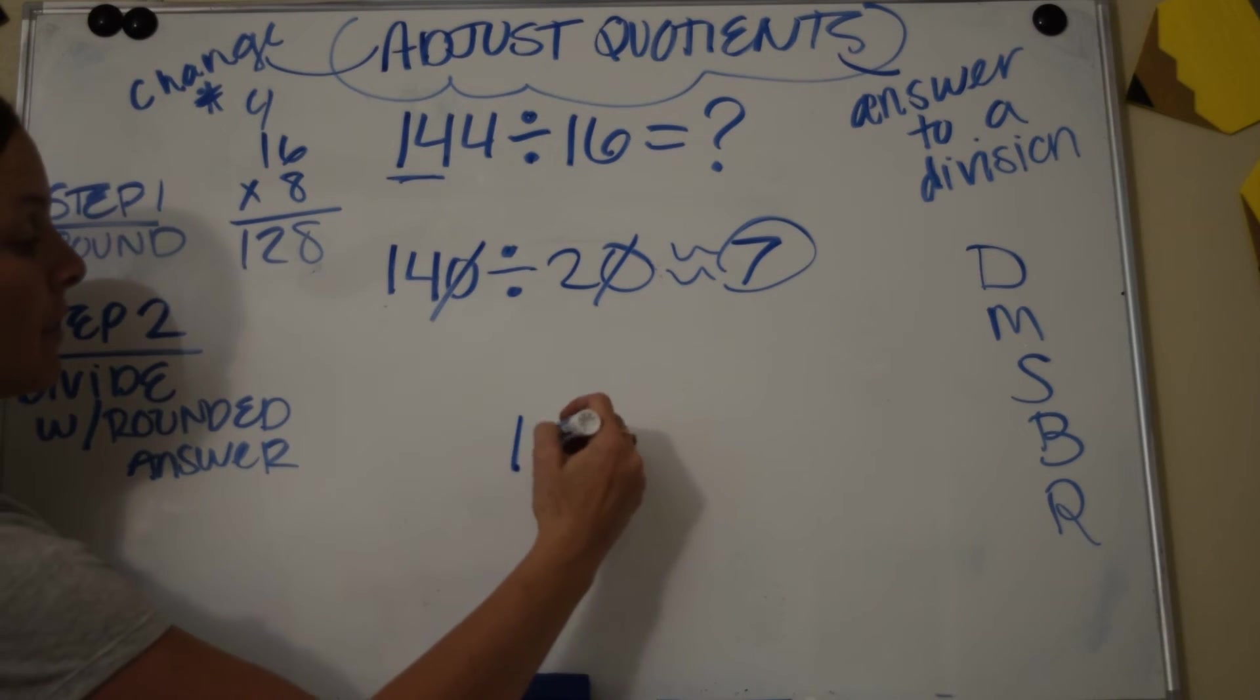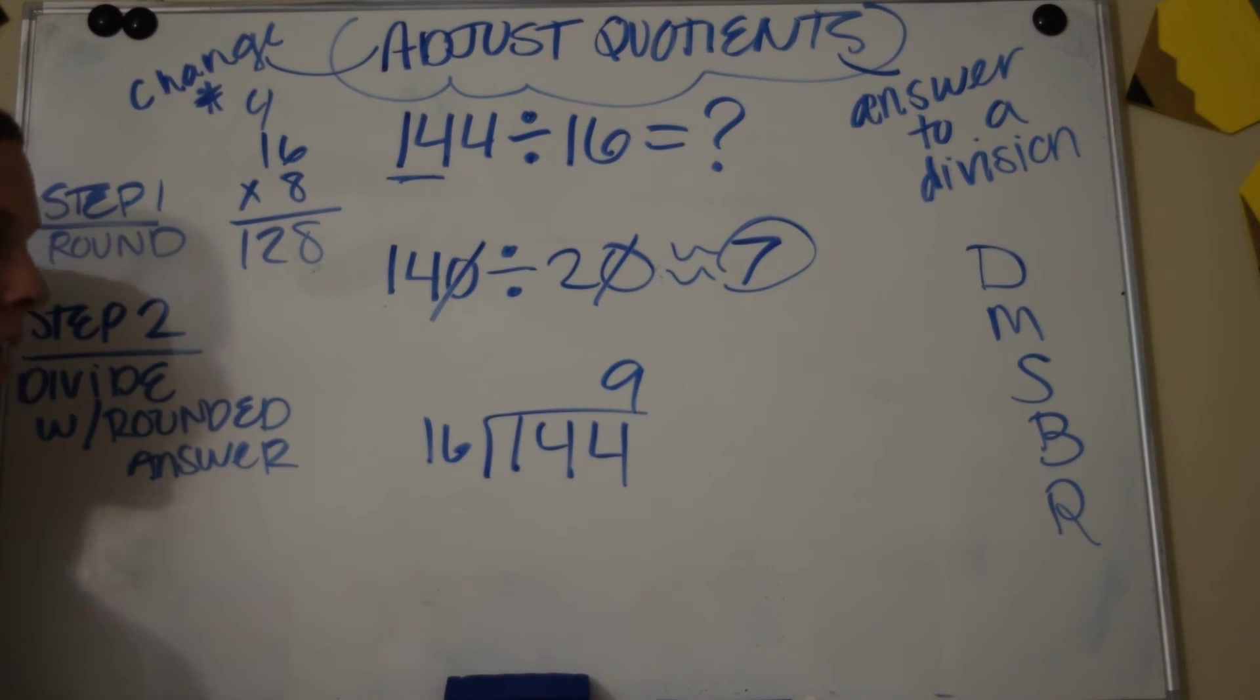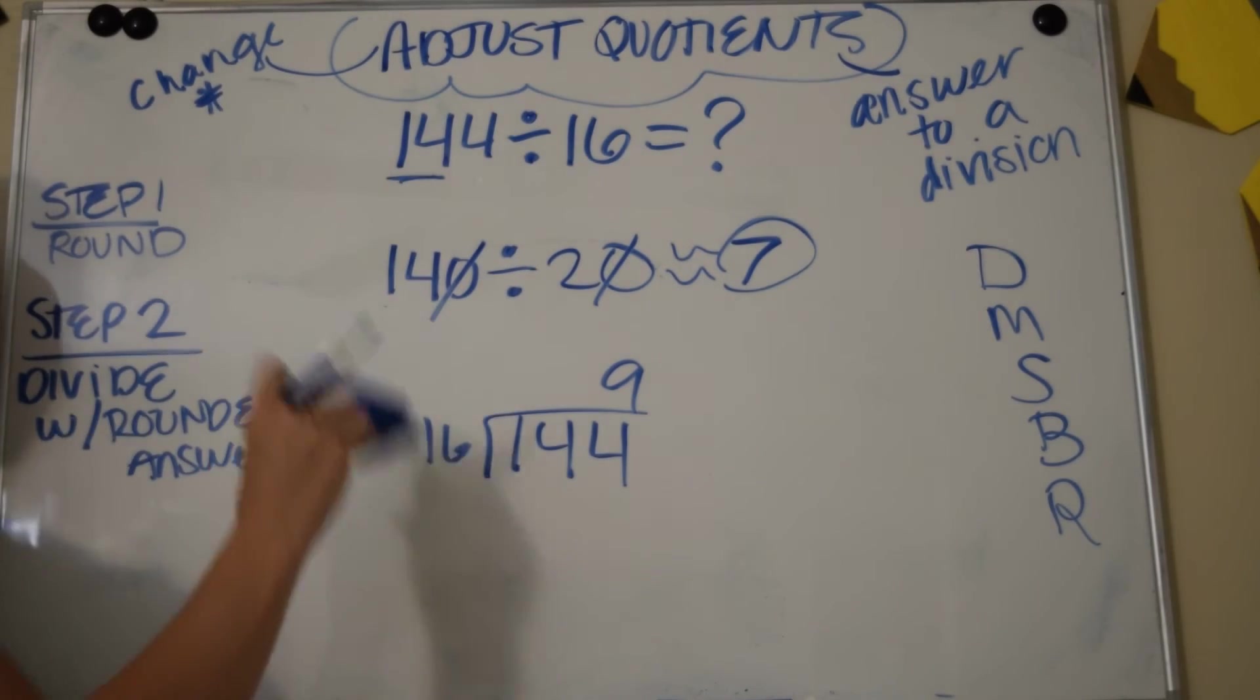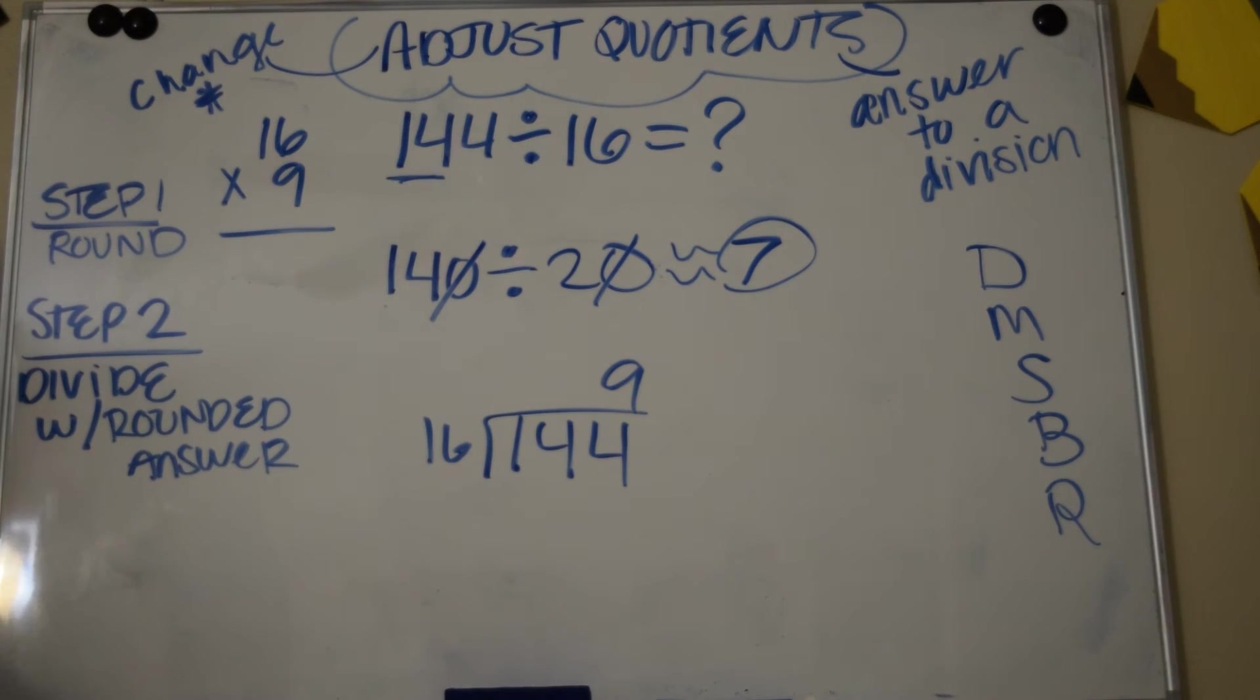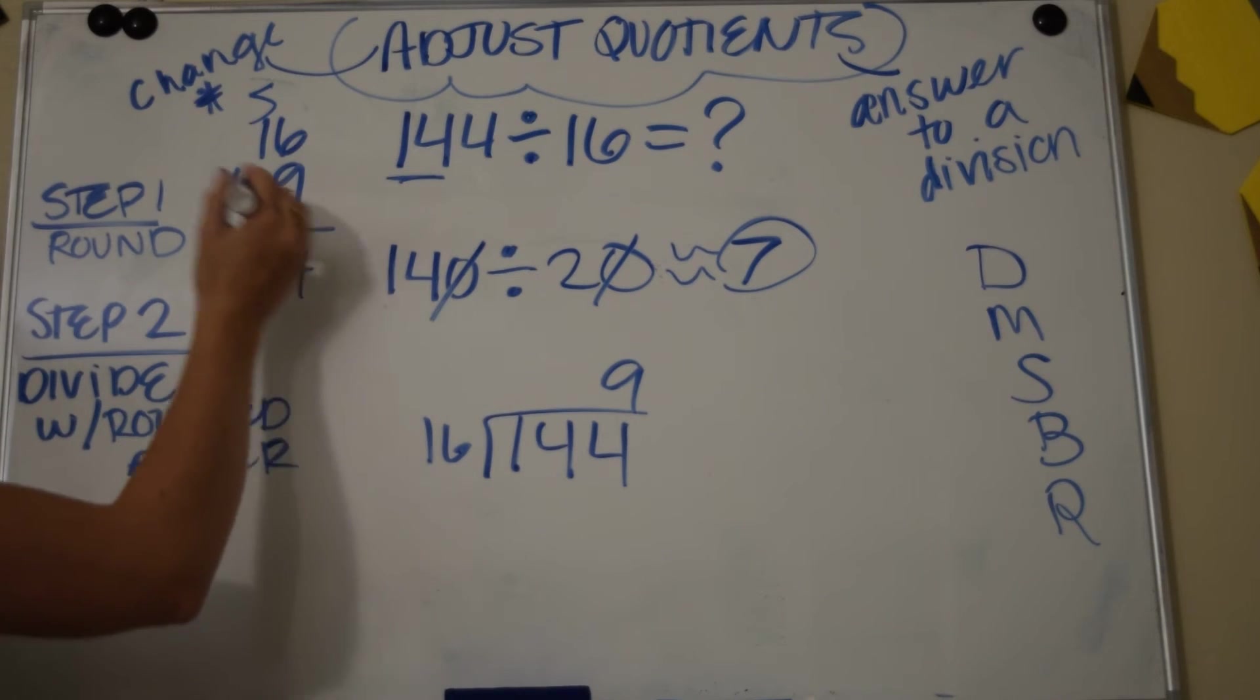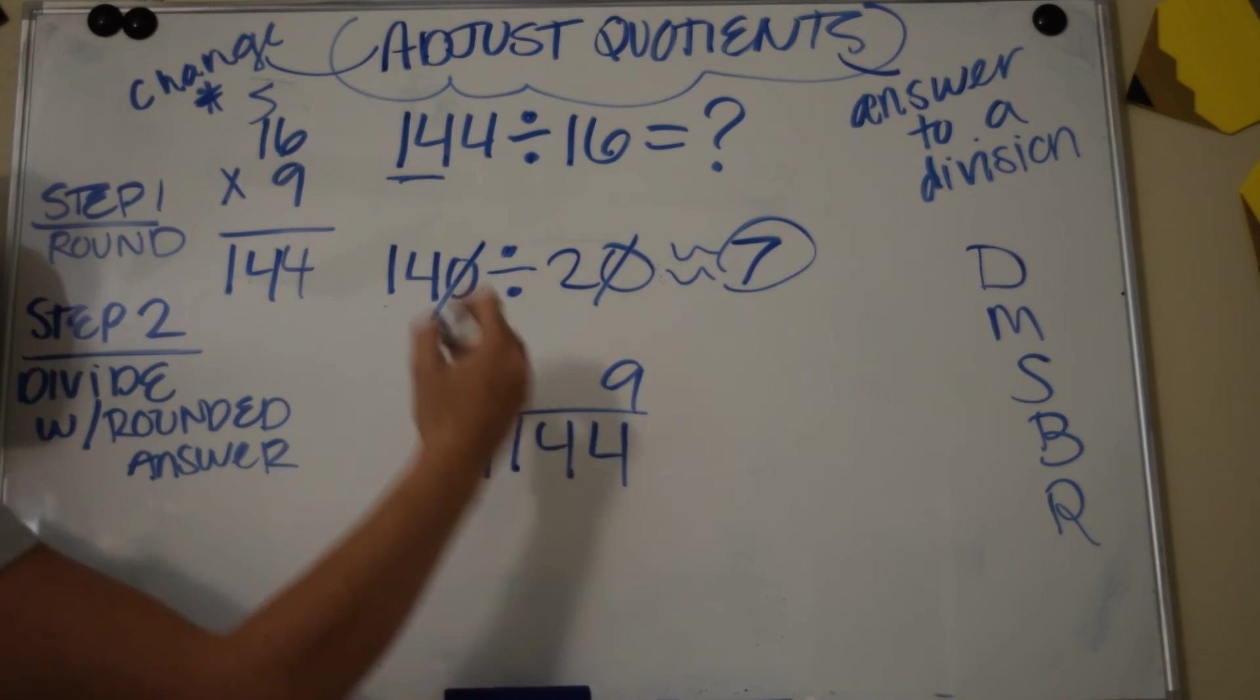Let's see if it's 144 divided by 16, and let's see if 9 is the answer. So I need to multiply 16 times 9. Okay, so 9 times 6 is 54, 9 times 1 is 9, plus 5 is 14. Oh my gosh, look at that!